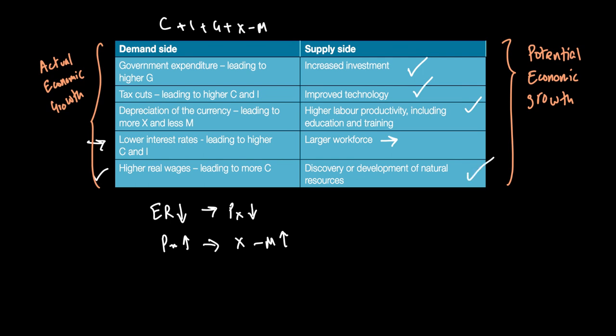Lastly, any discovery or development of natural resources can make our LRAS shift out or PPC shift to the right. So any improvement in the quality or quantity of factors of production can lead to what we call potential output going up.